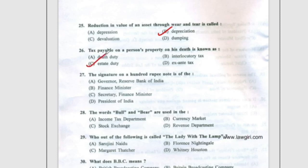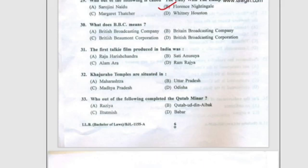Question 27: The signature on a 100 rupee note is of the Governor of the Reserve Bank of India, option A. Question 28: The words 'bull' and 'bear' are used in the stock exchange, option C. Question 29: Florence Nightingale is called 'the lady with the lamp'. Question 30: BBC stands for British Broadcasting Corporation, option D. Question 31: The first talkie film produced in India was Alam Ara, option C.